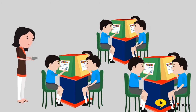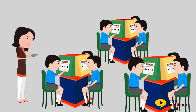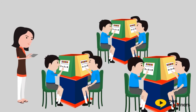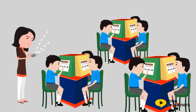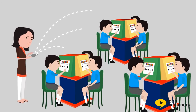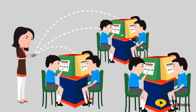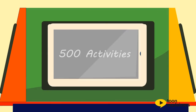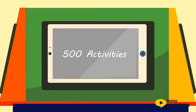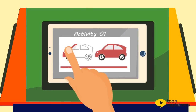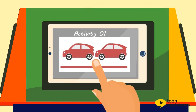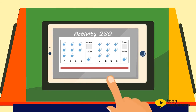At Tab Kids Classroom, each student has their own working tab. The entire setup is controlled by the Teacher tab. The teacher can select over 500 different activities based on your school's curriculum.